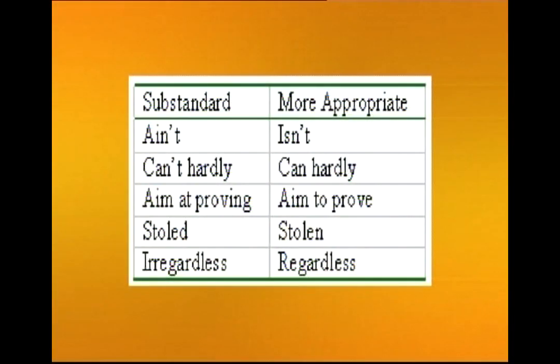Avoid substandard language when writing. This means avoiding incorrect words, incorrect grammar, slang, and faulty pronunciation — all of which suggest inability to use good English. Whether writing formally or informally, use correct language; it should not be substandard. Examples of substandard words: ain't, can't hardly, aim at proving, stole, irregardless — the correct forms are isn't, can hardly, aim to prove, stolen, regardless.